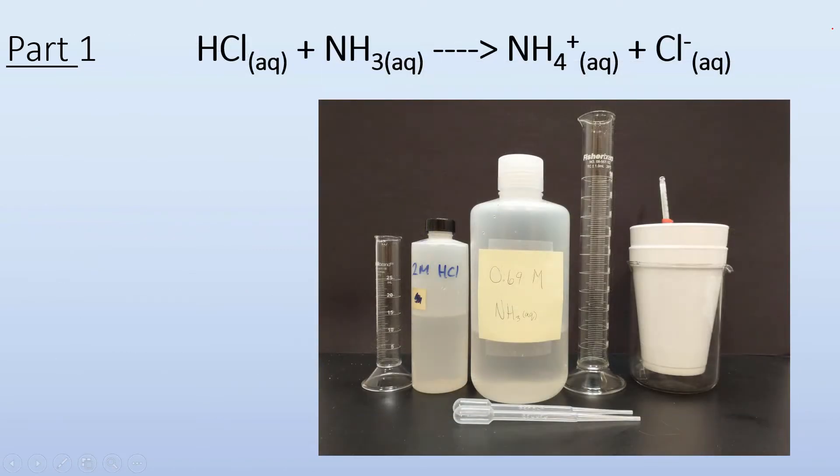In part one we're going to react hydrochloric acid with ammonia to give us the ammonium ion and the chloride ion. Our materials will be 2.0 molar hydrochloric acid which you can see right here in the picture, and 0.69 molar NH3. You might be asking why is this an odd molarity? Well this is what I got over the counter, just kind of cleaning ammonia. So we got NH3 aqueous with a concentration of 0.69 molar.